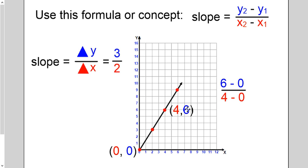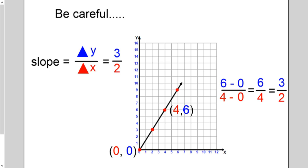If I start with the 6, for our y's, I'm going to use its x partner to start for our x's. And that's what we have to do. 6 minus 0. 4 minus 0. And 6 minus 0 is 6. 4 minus 0 is 4. Simplify it. It's 3 halves.